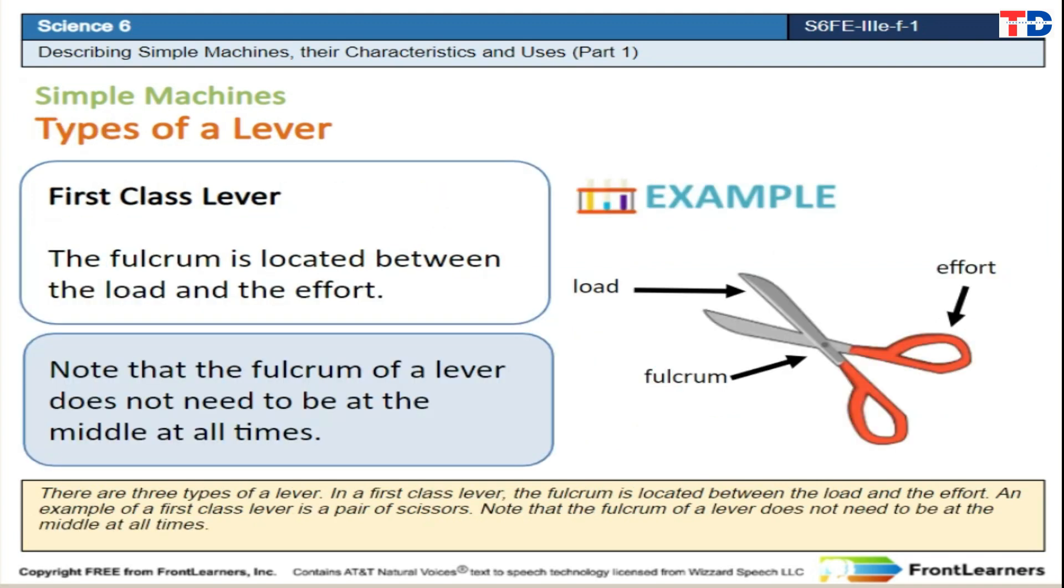There are three types of lever. In a first class lever, the fulcrum is located between the load and the effort. An example of a first class lever is a pair of scissors. Note that the fulcrum of a lever does not need to be at the middle at all times.